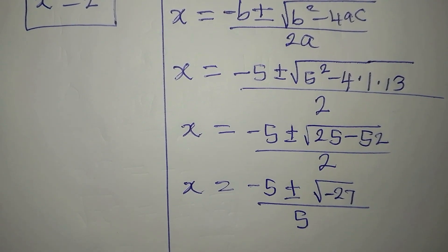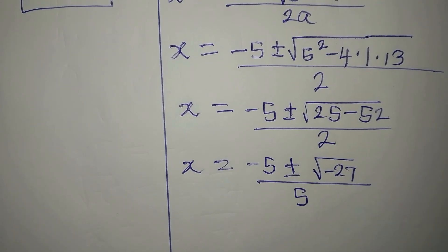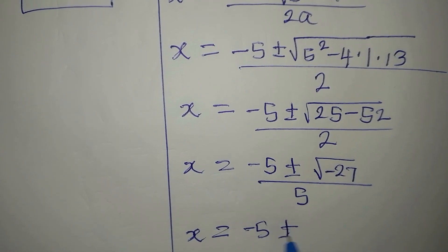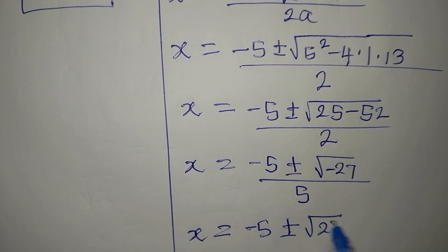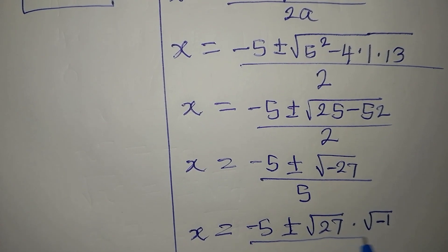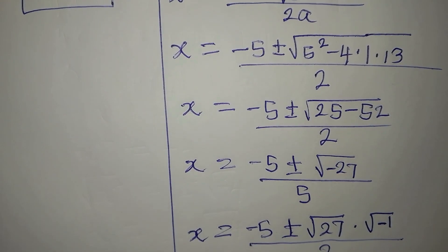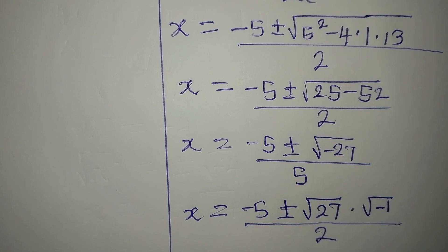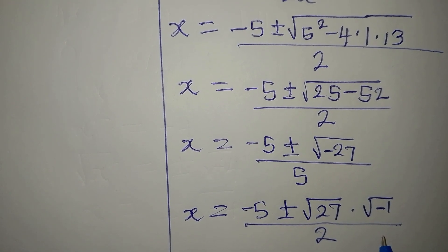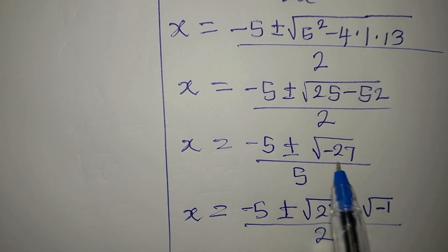Our next target is how to proceed with this square root of a negative number. So x is now minus 5 plus or minus square root of 27 times square root of negative 1, everything divided by 2.